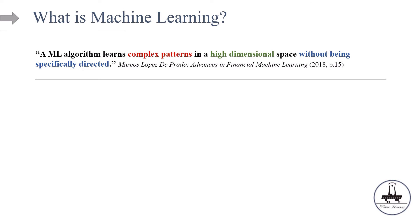Now let's answer the question of what is machine learning in a more formal way. There are many good definitions for machine learning, but I personally prefer the one that Professor Marcos López de Prado provided. For those interested in machine learning applications in finance, I highly encourage you to read his latest textbook, Advances in Financial Machine Learning. Here's the definition: A machine learning algorithm learns complex patterns in a high dimensional space without being specifically directed. However, this 'without being specifically directed' doesn't mean there's no human involved. At the end of the day, we humans set the rules for the machine learning algorithm.